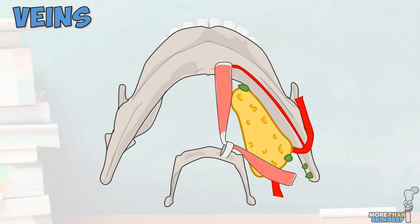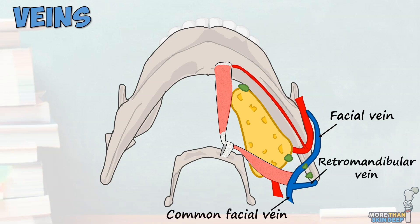The largest vein in the triangle is the facial vein which passes superficial to the submandibular gland and the digastric muscle before joining the retromandibular vein to produce the common facial vein which in turn drains into the internal jugular. The facial vein also receives a tributary from the submental vein.